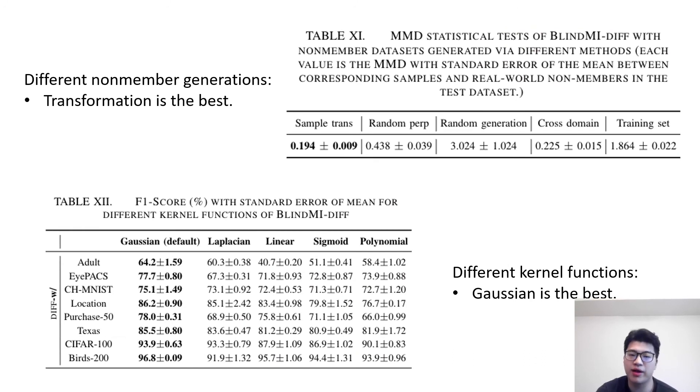Apart from comparing to the other membership inference attacks, we also evaluate different non-member generation methods and kernel functions for BlindMI itself. We found sample transformation is the best, which generates the non-members closer to real test setting, while the Gaussian kernel performs better than the other kernels.